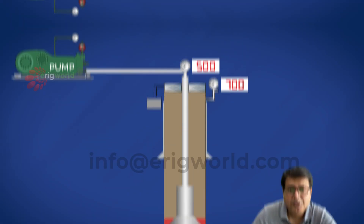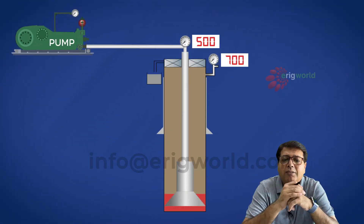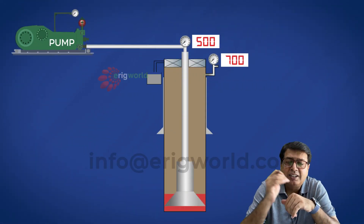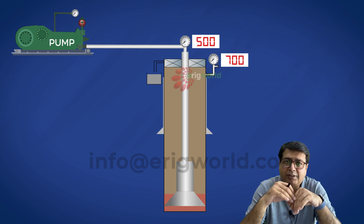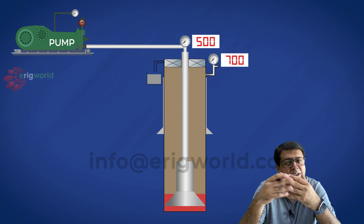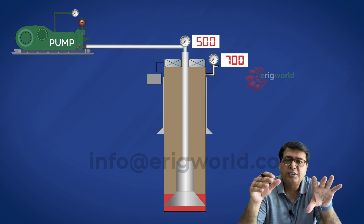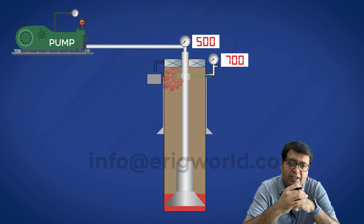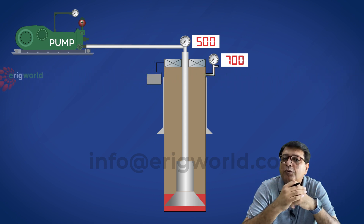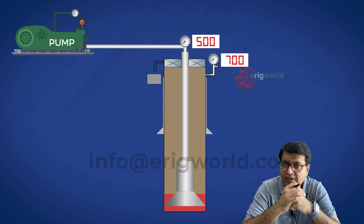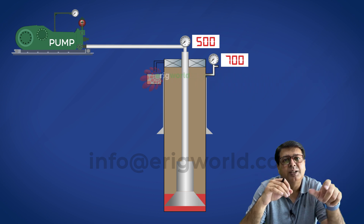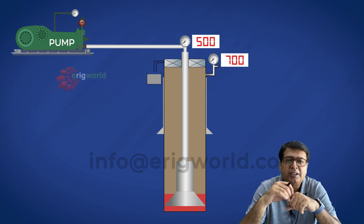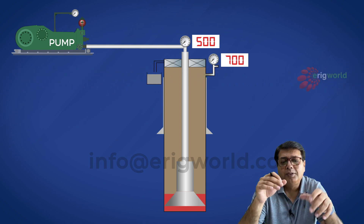Gas is circulated to surface using the driller's method. In which cycle will we have gas in the hole? That is the first cycle. In the first cycle there is gas in the wellbore; in the second cycle there is no gas in the wellbore. So the question is talking about the first cycle. In the first cycle, we keep the mud weight the same because it is done with the current mud. We start the pump.